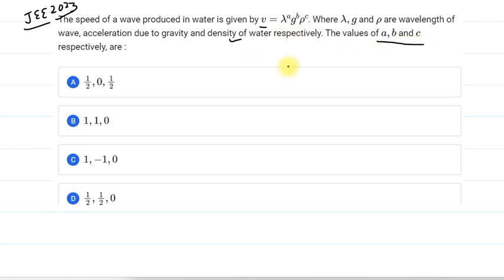And to solve this, we will use dimension analysis. So this is velocity, this is basically speed there. Speed of a wave is given to us. And this speed is given in terms of lambda, G, and rho.